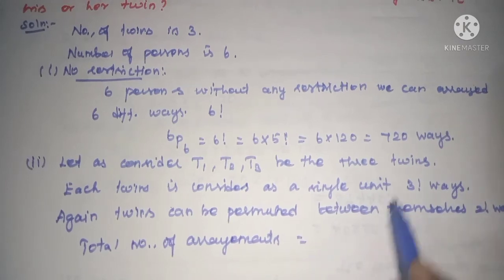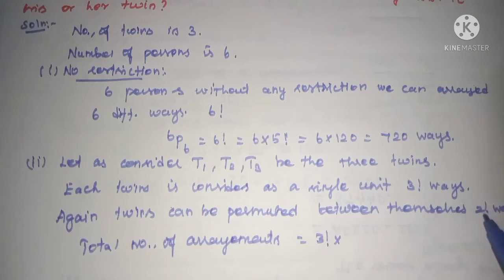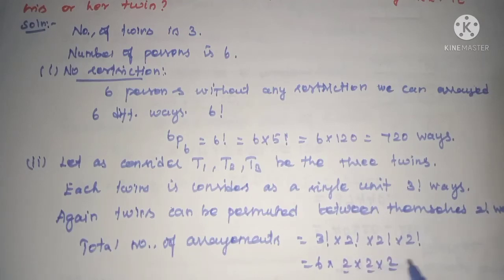First we have 3 factorial, then each twin can be arranged in 2 factorial ways. In total we have three twins, so 3! = 6, and 2 × 2 × 2 = 2³ = 8, so 6 × 8 = 48 ways.